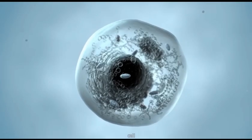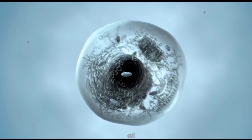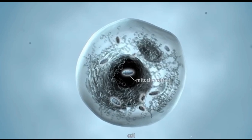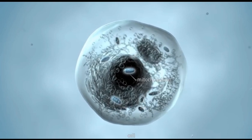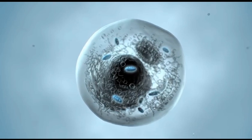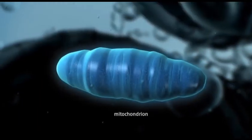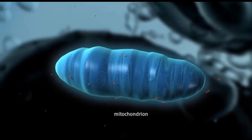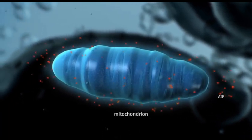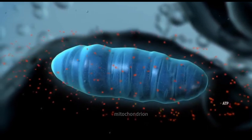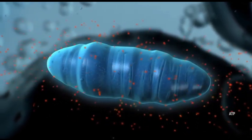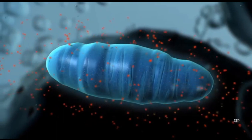Our body is made up of trillions of cells. They all require energy to function. This energy is created within our cells, in the mitochondria. Here, food is converted into chemical energy called ATP. ATP is released by the mitochondria, so cells can use it.